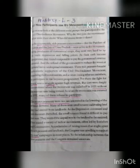Next paragraph, the poorer peasants were not just interested in the lowering of the revenue demand. Many of them were small tenants cultivating land that were rented from landlords. As the depression continued, the small tenants found it difficult to pay their rent. They wanted the unpaid rent to the landlord to be limited. They joined variety of radical movements often led by socialists and communists. Afraid of raising issues that might upset the rich peasants and landlords, the Congress was unwilling to support no rent campaign in most cases. So the relationship between the poor peasants and the Congress remained uncertain.